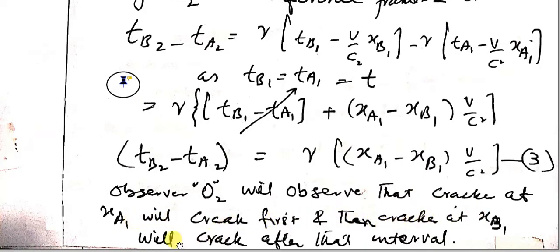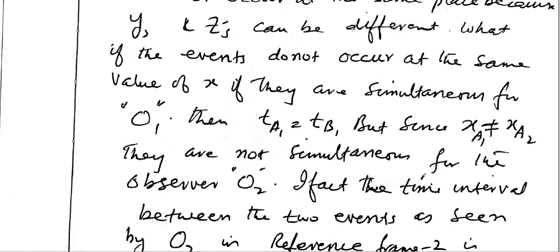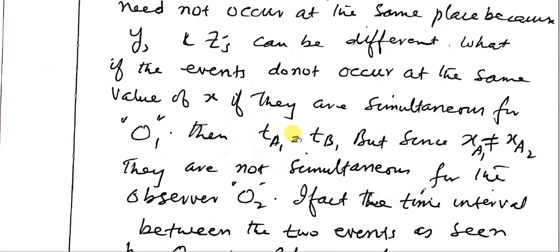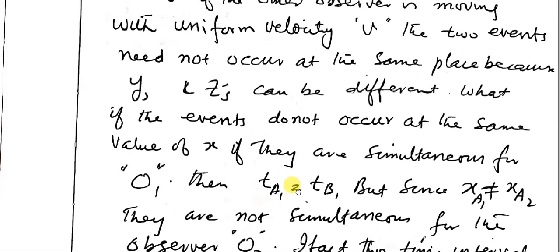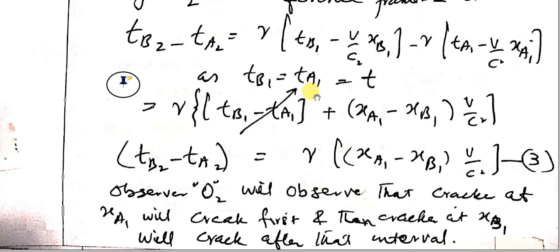Observer O2 will observe that the cracker at x_a1 cracks first and the cracker at x_b2 cracks later. So that is called simultaneity — an event may be simultaneous for one observer, but the same event may not be simultaneous for another observer moving with a certain velocity v. That is the simultaneity principle or phenomenon. Now let us see a very beautiful animation that will explain this much better.